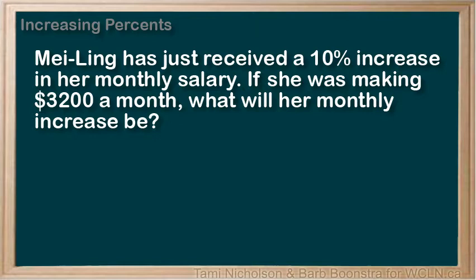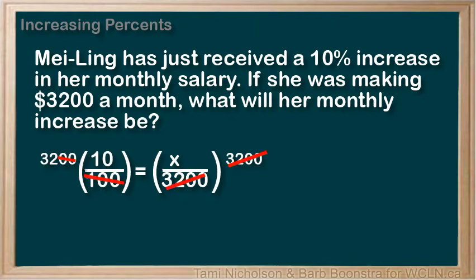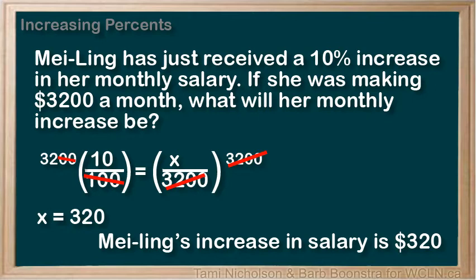Here is a slightly different question. Read the question carefully and see if you notice the difference in what is being asked. Mei Ling has just received a 10% increase in her monthly salary. If she was making $3,200 a month, what will her monthly increase be? In this question, we are asking for what is the increase in her salary. Our percent equation becomes: what is 10% of $3,200? Write the equivalent ratios and substitute in the values. When we solve for the unknown, we get an answer of $320. This is how much more Mei Ling is making per month.